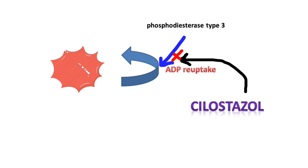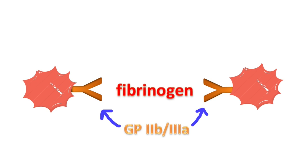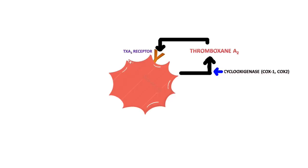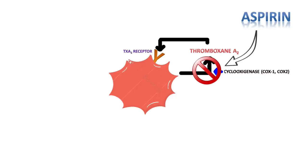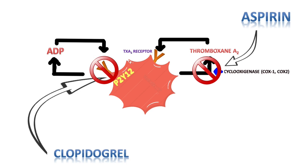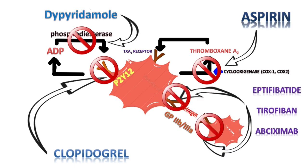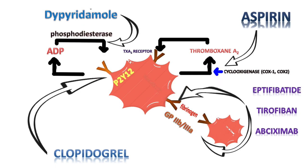Cilostazol has a similar mechanism; however, it selectively blocks type 3 phosphodiesterase. Platelets can also attach to each other by fibrinogen with the help of GP2B3A. The drugs that bind to these receptors are eptifibatide, tirofiban, and abciximab. To summarize: aspirin inhibits cyclooxygenase to prevent thromboxane A2 synthesis; clopidogrel blocks the P2Y12 receptor for ADP; dipyridamole inhibits phosphodiesterase stopping ADP reuptake; and eptifibatide blocks glycoprotein 2B3A.